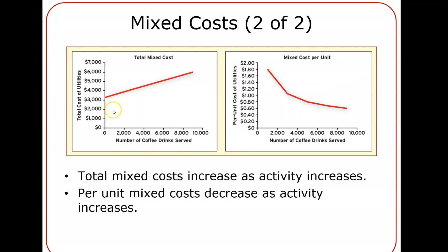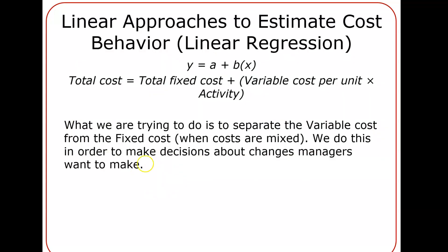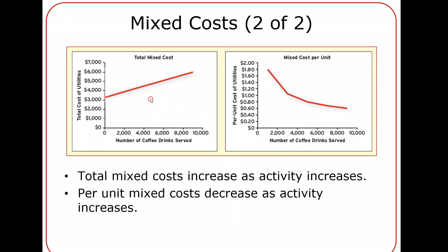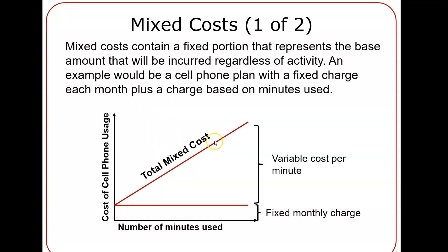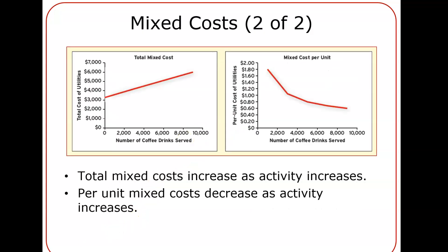Mixed costs increase as activity increases, and the per-unit mixed cost goes down the more units you produce. What we're really talking about with mixed costs is an equation that's actually the slope of a line, and we'll be using that in the future. Let's do a couple of examples on fixed and mixed costs.